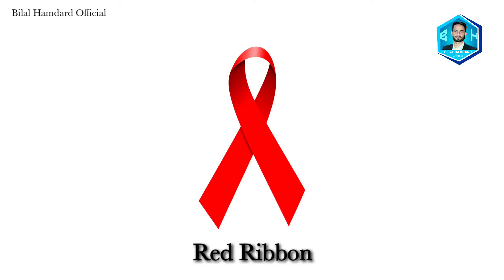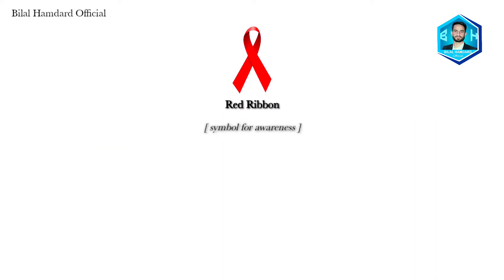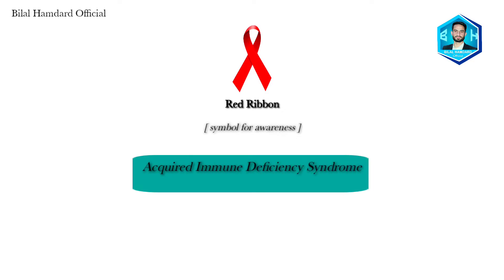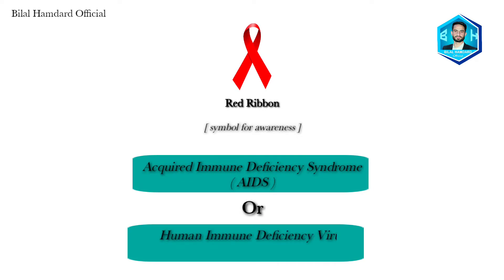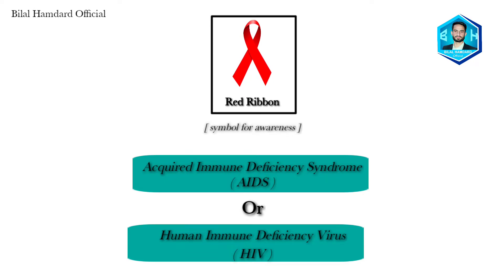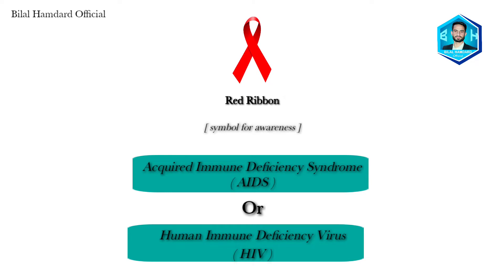This symbol of a red ribbon is often seen in many places, but what does it signify? It's the symbol used to create awareness about Acquired Immune Deficiency Syndrome, abbreviated as AIDS, or simply Human Immunodeficiency Virus, abbreviated as HIV. The concept of the red ribbon was adopted to create awareness for the disease as well as to morally uplift the people suffering from it.